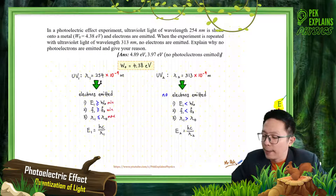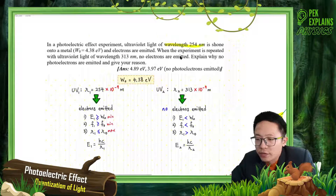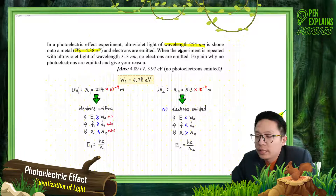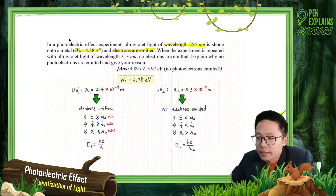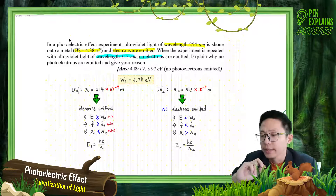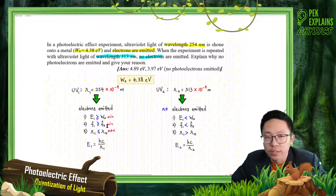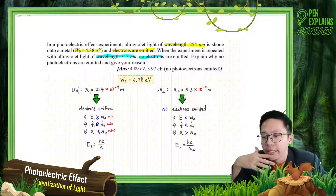The first wavelength is 254 nanometers — call it lambda 1 — and the work function of the metal is given. Electrons are emitted for this wavelength. For the other case, wavelength 313 nanometers — lambda 2 — no electrons are emitted. To investigate why, you need to compare the energy of the incident photon, the frequency, or the wavelength against the work function, threshold frequency, or threshold wavelength. Just choose either one.